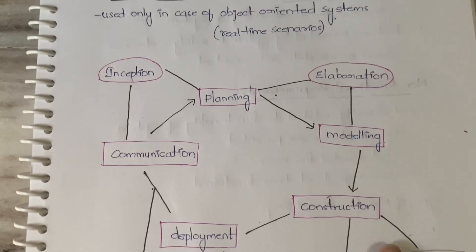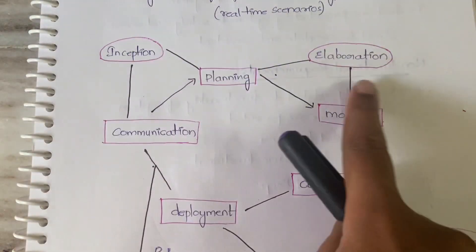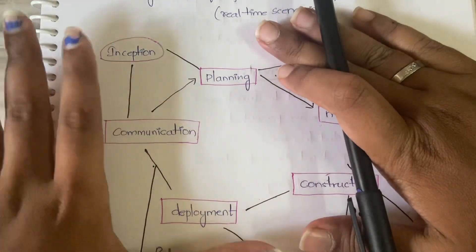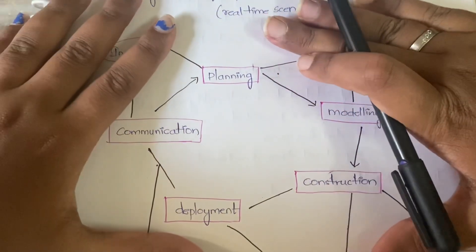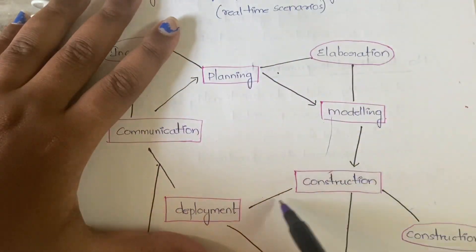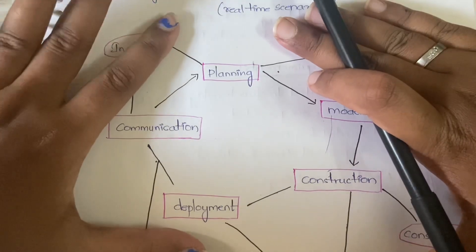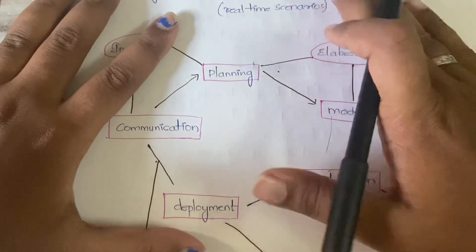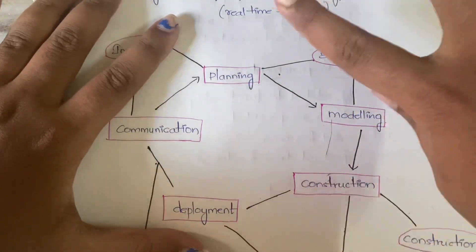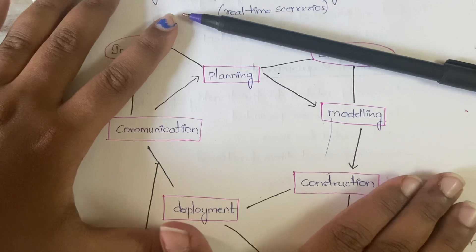You will definitely get confused on seeing the diagram but don't worry. First forget the oval symbols and just see this - it is in the form of a cycle: communication, planning, modeling, construction, deployment. First understand and draw these five phases as a cycle in the exam. This is the diagram.